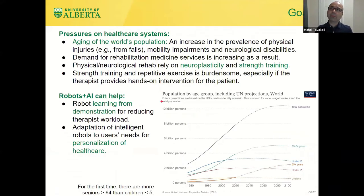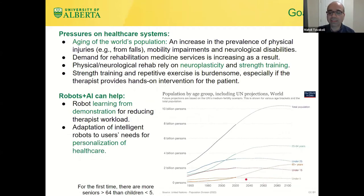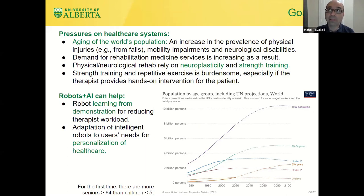The main motivator for much of the rehab work is the aging of population. If you look at the graph at the bottom, right now the number of people under five is fewer than the number of people over 65. This has led to an increase in the prevalence of physical injuries from falls, mobility impairments and disabilities. That's why the demand for rehabilitation services is at a high.